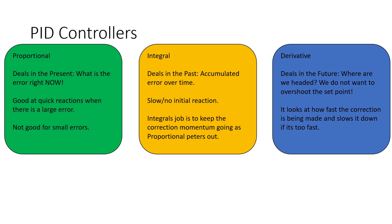Proportional, dealing in the present, is really good for quick reactions especially when there is a large error. The term proportional means his action is in proportion to the error — large error, large reaction; small error, little to no reaction. And that's where the integral comes in.